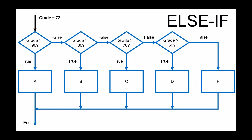So again, we start with a grade as our input and evaluate it with our logical expression. In this case, it is not true — the grade is not greater than or equal to 90, so that's false. We move on to our second logical expression, which is also false. We move on to our third logical expression. Finally, our input grade of 72 in this example is greater than or equal to 70 — that is true. So we have received a letter grade of C and our program ends.